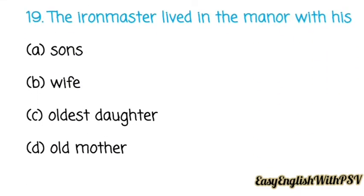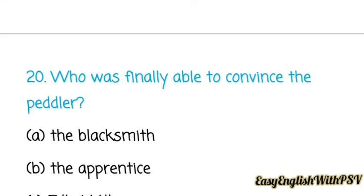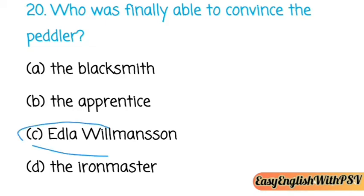Question number nineteen: The iron master lived in the manor with his — sons, wife, oldest daughter, or old mother? The correct option is: he lived with his oldest daughter, Edla Willmansson. Question number twenty: Who was finally able to convince the peddler? The girl — the daughter of the iron master, Edla Willmansson.